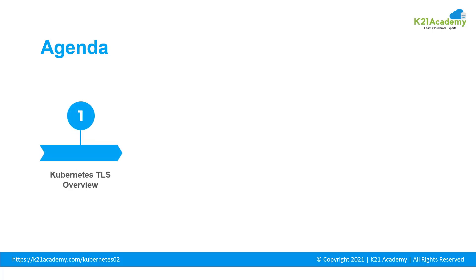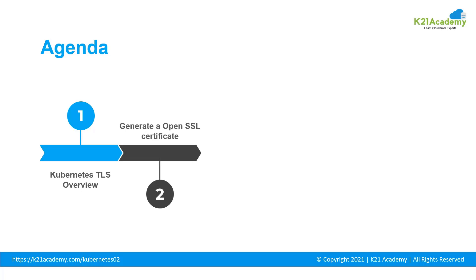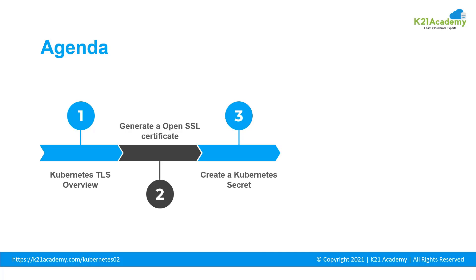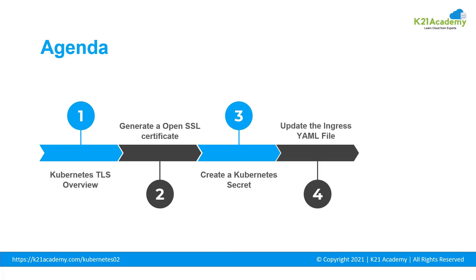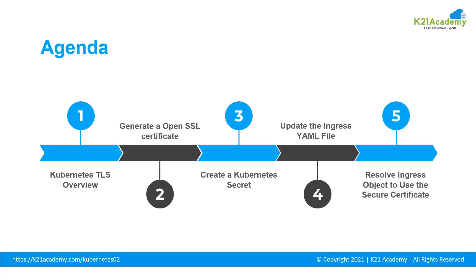Firstly, we will be getting an overview on Kubernetes Transport Layer Security. Then we will see how to generate an OpenSSL certificate. Post that, we will see how to create a Kubernetes secret. Then we will see how to update the ingress YAML file, and finally, how to resolve the ingress object to use the secure certificate.